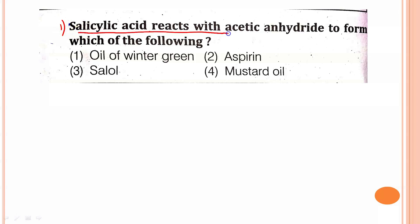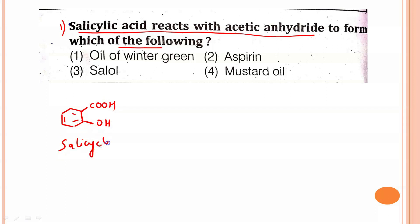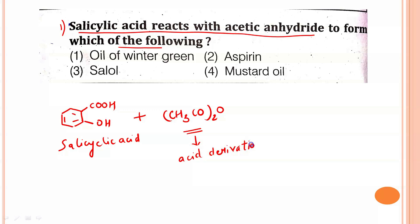The question says: salicylic acid reacts with acetic anhydride to form which of the following? Everybody knows the structure of salicylic acid. The question says it is reacting with acetic anhydride. We all know that acetic anhydride is already an acid derivative, so in this reaction the acid derivative will not react with the acid part of salicylic acid — it will react with the phenol part.